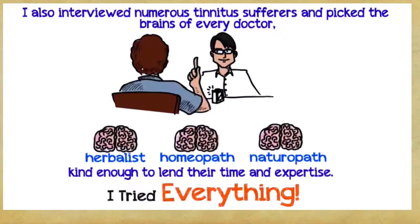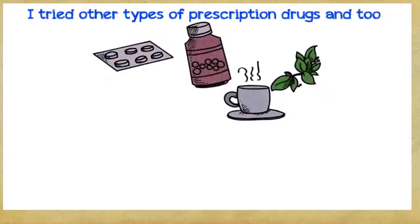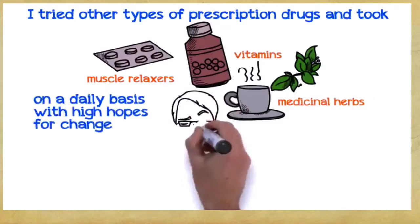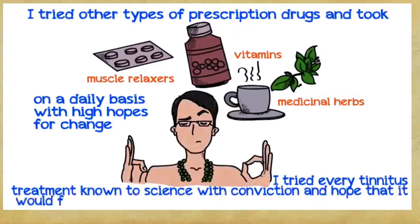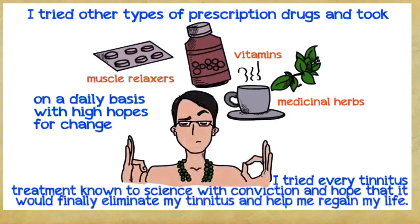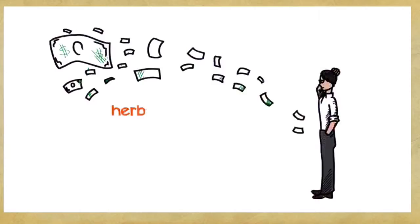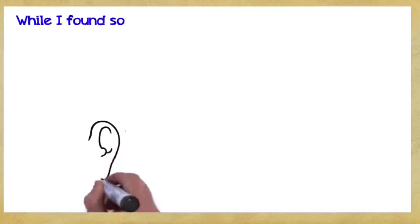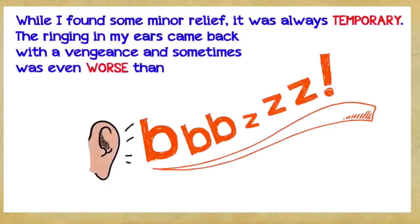I tried everything. Scientific facts, figures, and theories weren't enough. I tried other types of prescription drugs and took more muscle relaxers, vitamins, and medicinal herbs on a daily basis with high hopes for change. I bought numerous white noise CDs and did plenty of noise therapies, but to no avail. I tried every tinnitus treatment known to science with conviction and hope that it would finally eliminate my tinnitus and help me regain my life. Over the years, I spent a small fortune trying every type of product and treatment you could possibly think of—herbal remedies, tonics, habituation, detox diets, vitamin therapy, and so on. While I found some minor relief, it was always temporary. The ringing in my ears came back with a vengeance and sometimes was even worse than before treatment.